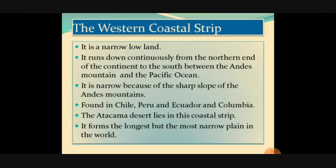The Western Coastal Strip is a very narrow lowland. It runs continuously from the northern end of the continent to the south, between the Andes Mountains and the Pacific Ocean. It is narrow because of the sharp slope of the Andes Mountain — sandwiched between the Andes and the Pacific Ocean. It is found in Chile, Peru, Ecuador, and Colombia. The Atacama Desert is very important — it lies in this coastal strip and is a very narrow desert between the Pacific Ocean and the Andes Mountains.